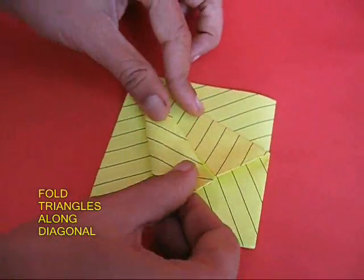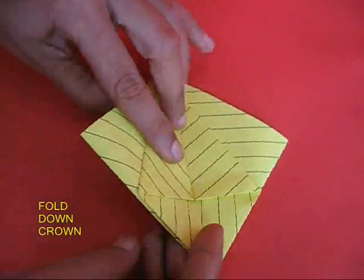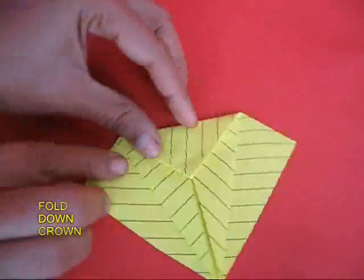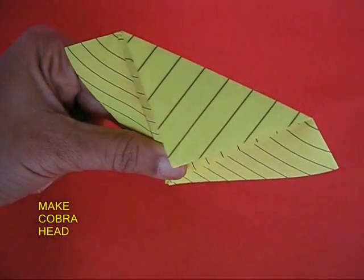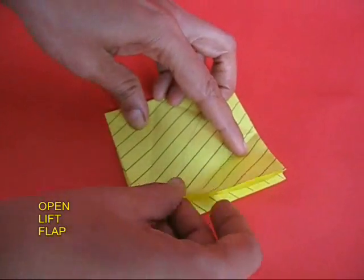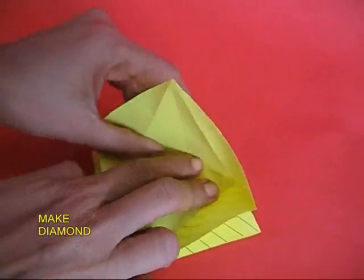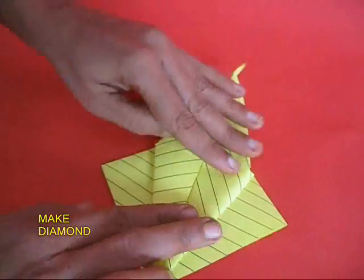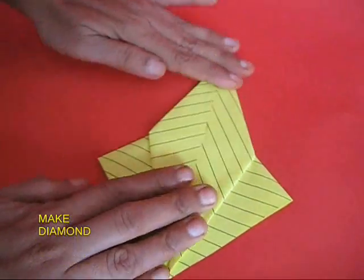Now fold two triangles on the diagonal and then fold the head. It would become like a cobra's head, like a snake hood. Do the same. Now open this up, lift it to the base of the crown and then fold a diamond shape.